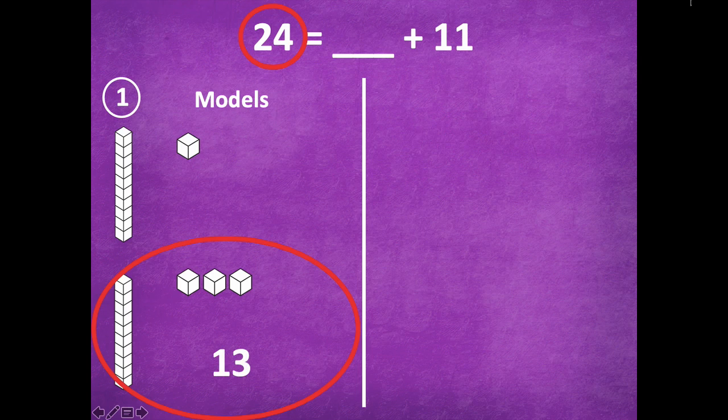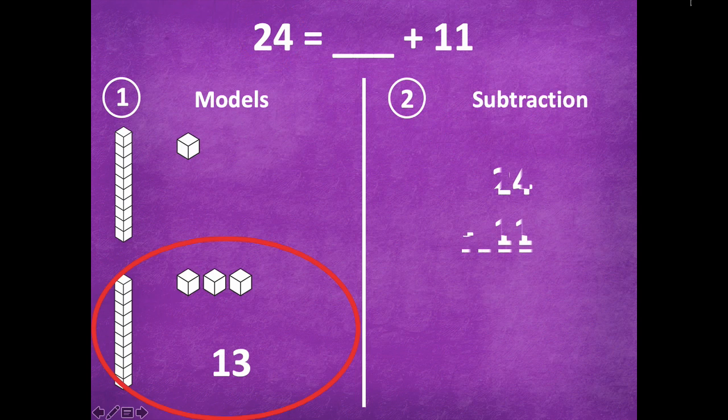13, you're right! All right, so let's try it with subtraction as well. So here you're going to set up your problem. We're going to take the sum and subtract the addend that we know, and that should give us our missing addend. So we can start in the ones place. Four ones, if I take away one one, I'm left with three ones. Move to the tens place, I have two tens, take away one ten is one ten, so we have 13 as well. So our missing addend is 13.